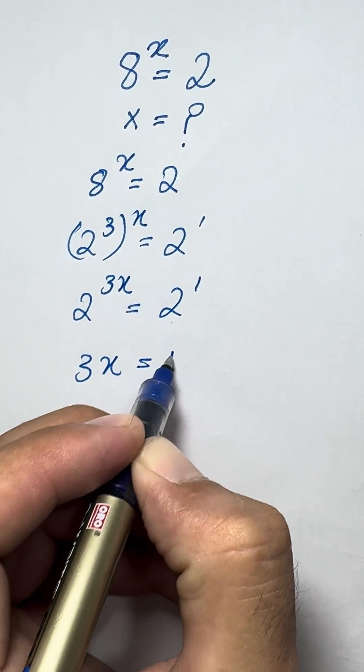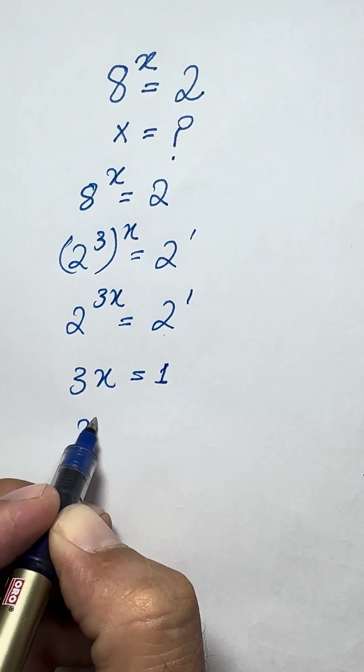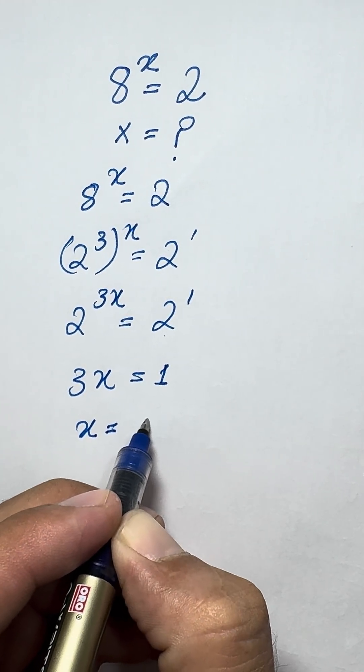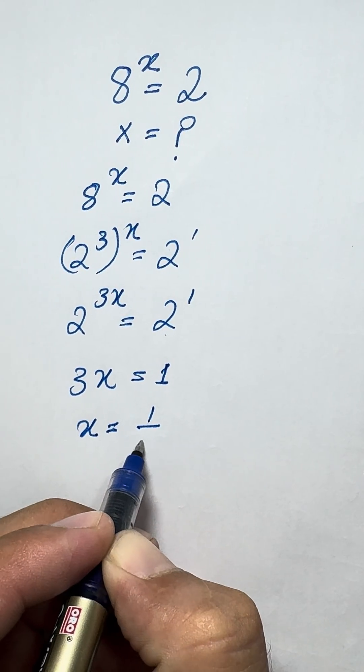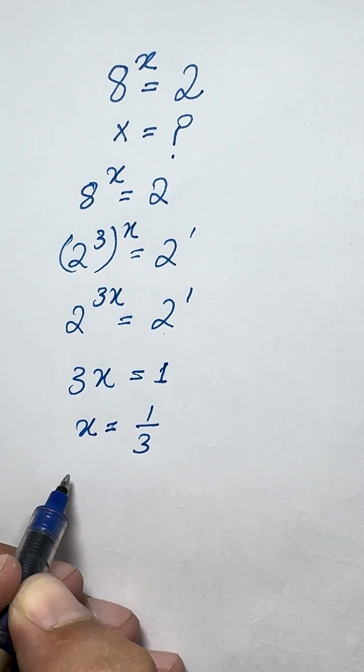So 3X equals 1, which means X is equal to 1 divided by 3. Now let's check if this is correct.